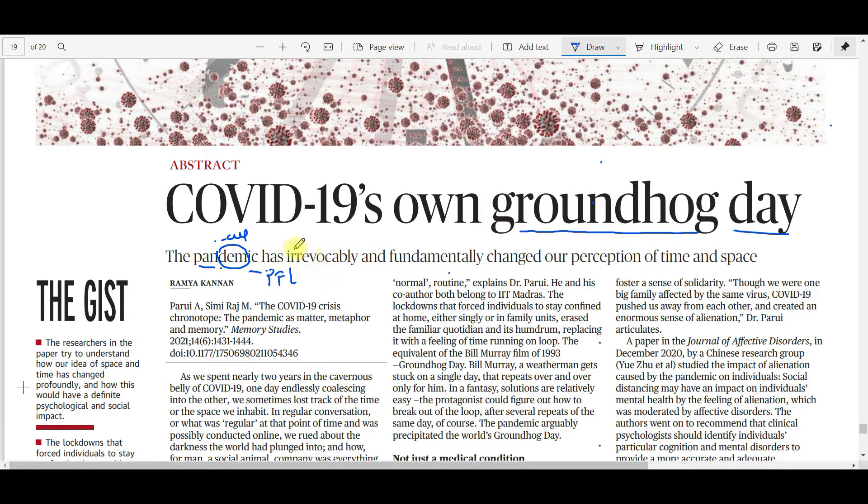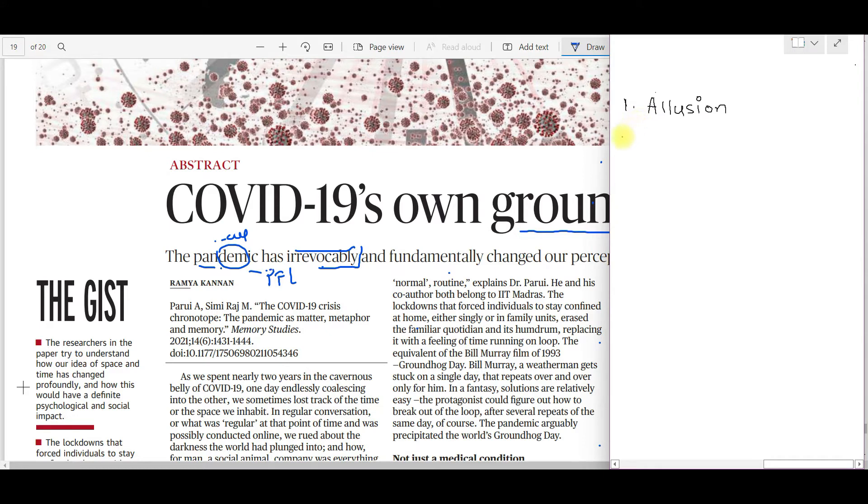One more word we find is irrevocably. Anything done irrevocably is done in a manner that cannot be reversed or changed. Irrevocable laws mentioned in the constitution - unless there's proper amendment, the laws cannot be changed. They are irrevocable. Now the line means: the pandemic has irrevocably and fundamentally - in a very elemental, basic sense - changed our perception of time and space. This is the main tenor of the article. What is tenor? Tenor is the main flow of idea or main opinion carried throughout the article.